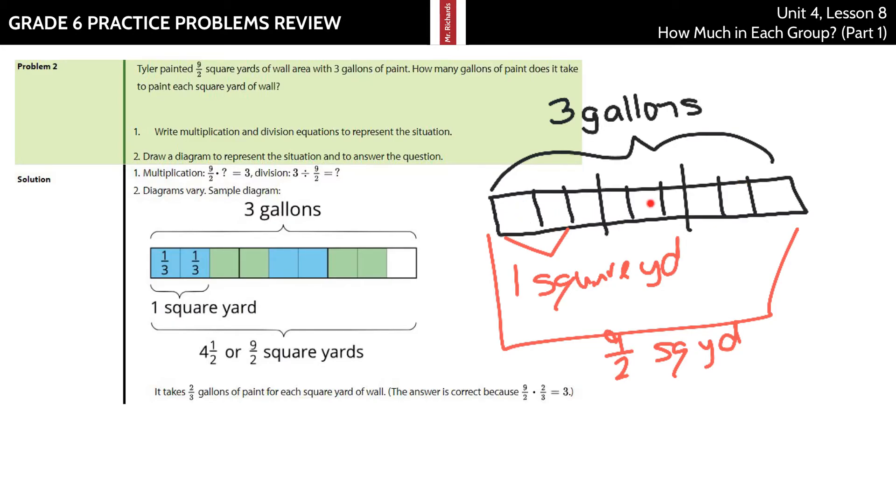Well, the three gallons is also split through this. And we have one, two, three, four, five, six, seven, eight, nine parts of that because of those nine-halves. And so three gallons split into these ninths. Well, here's a gallon, here's a gallon, and here's a gallon. Each of those is split into the three here, so each of these is one-third of a gallon.